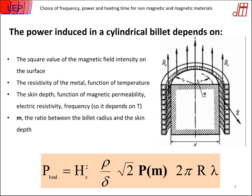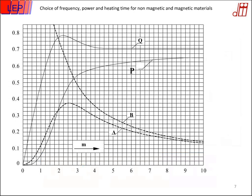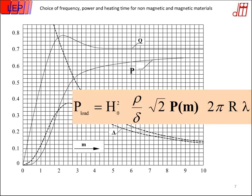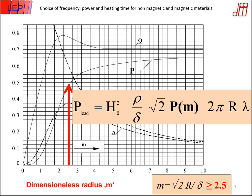Dimensionless quantities are very useful for a general description of this kind of process. In particular, the induced power depends on a parameter P that is a function of this ratio M. In the graphic, we have the value of P directly linked to the power we can transfer to the billet. We want to maximize that power, which means the M parameter must be at least 2.5 or 3. If this value is smaller than 3, we have bad coupling between the inductor and the billet.